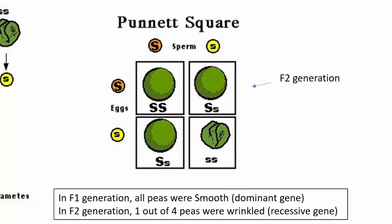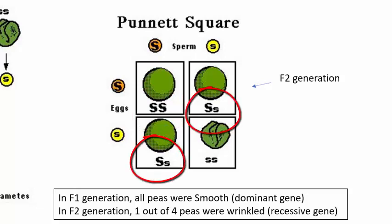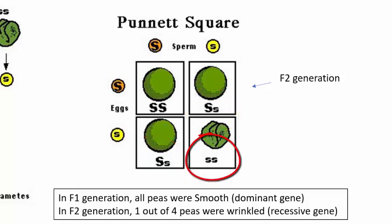A way to understand why this leads to a three to one ratio is through what we call Punnett squares. In the F2 generation — the grandchildren — where the parent plant would have had an uppercase S and a lowercase s gene, there would be four possible combinations of genes if we allowed those plants to continue producing offspring. We could have two dominant uppercase S smooth genes, or one uppercase smooth and one lowercase wrinkle gene, or the possibility of two recessive lowercase s genes — but that would only happen one out of four times. So you would expect three times as many smooth peas as wrinkled peas.